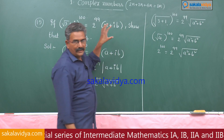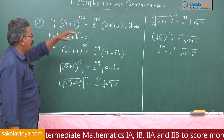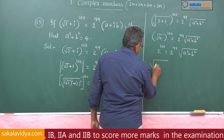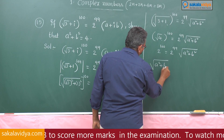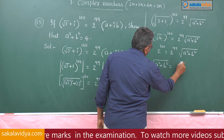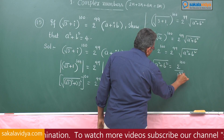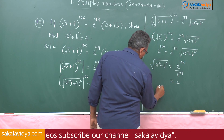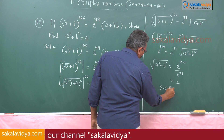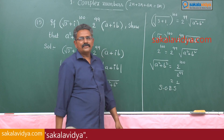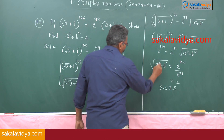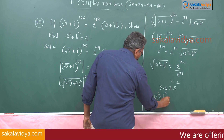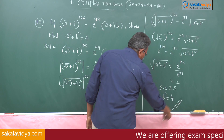Our aim is to find a² + b². So √(a² + b²) = 2^100 / 2^99 = 2^(100−99) = 2^1 = 2. Squaring both sides: a² + b² = 4. Hence it is proved.